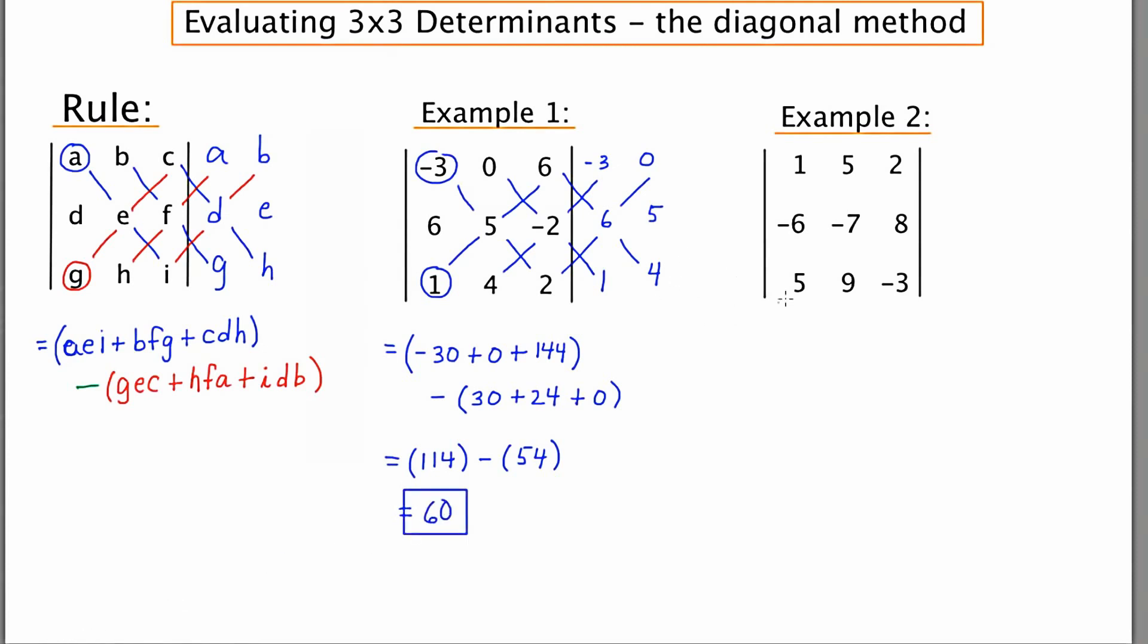Going to example two, I will start by writing over the first two columns, maintaining the good spacing. Starting on the upper left. One times negative seven times negative three is 21. The next product is going to be 25 times 8. And the last one's going to be negative 108.